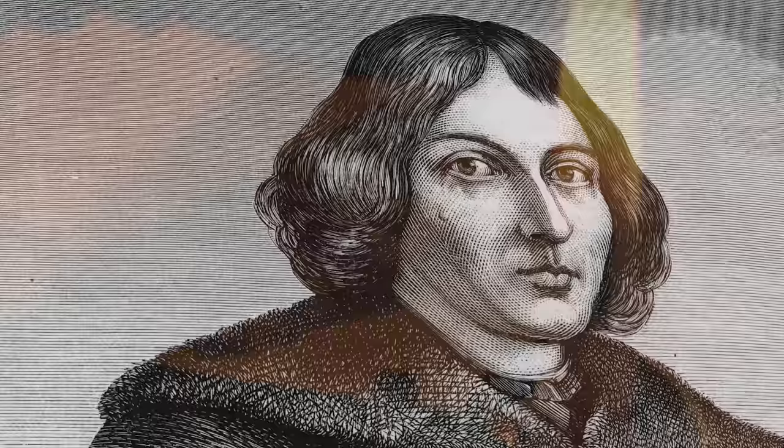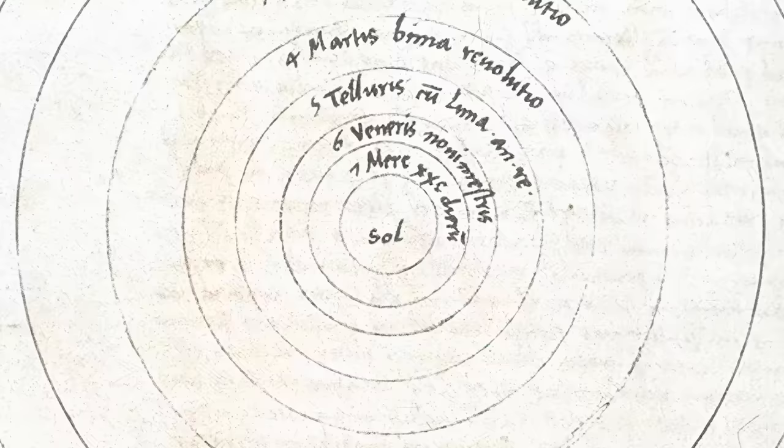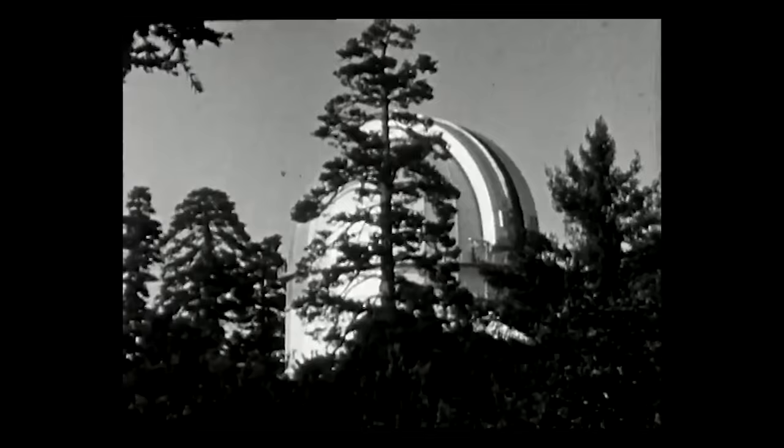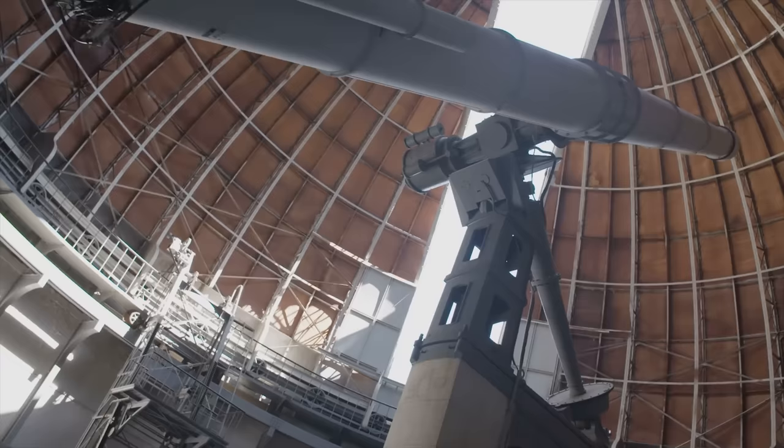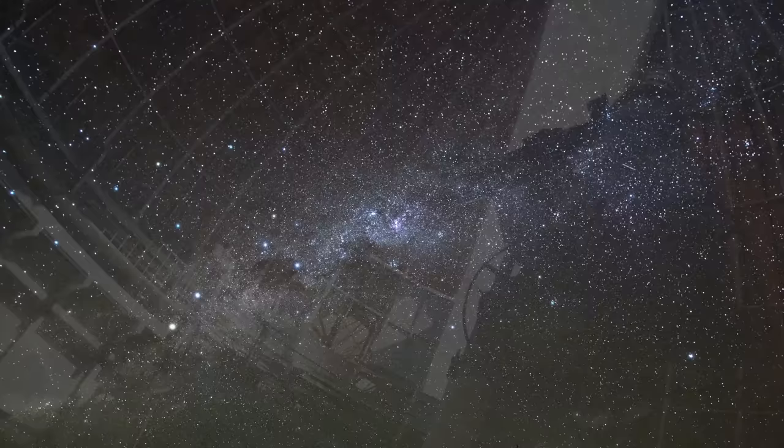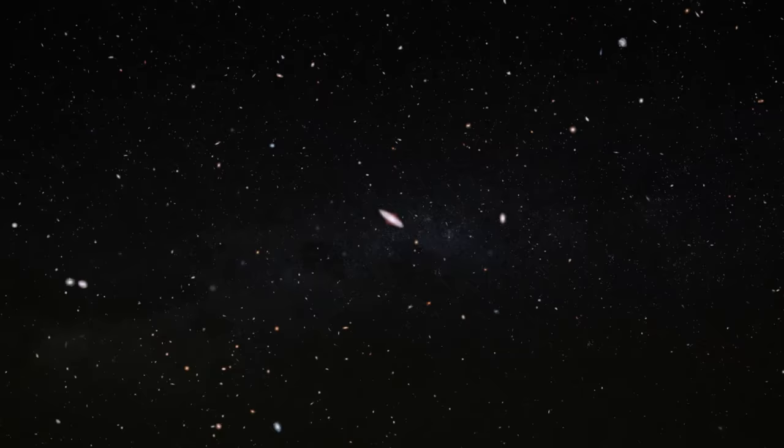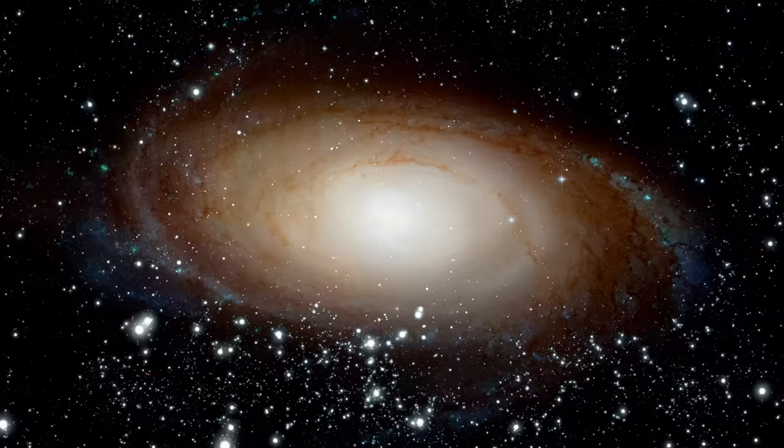But science has since stripped away this illusion. In 1543, the astronomer and mathematician Nicolaus Copernicus displaced the earth, placing the sun at the centre of everything. The dethroned earth orbited this fiery heart of the universe. The coming of the 20th century saw us demoted further. As massive telescopes peered into the heavens, it became clear that the sun is but one of billions of other stars within our Milky Way galaxy. And now, we know the Milky Way is one of potentially trillions of galaxies in the observable universe.